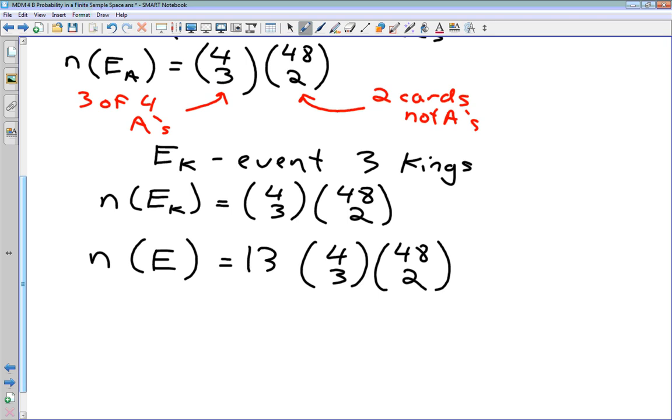So there are thirteen ways that we can do this, four choose three, and 48 choose two. So I'll just make a note here that there are thirteen different numbers.